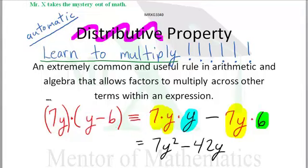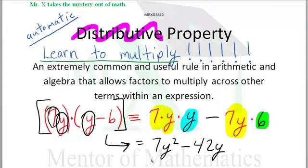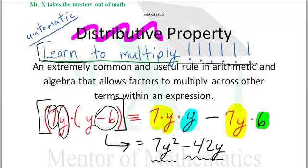I'm telling you, you want to be able to go from this directly to that. They are equivalent. 7 times y times y times y. That's that. 7 times y times negative 6. That's that. Learn to multiply.